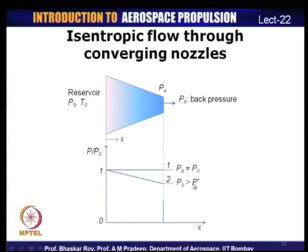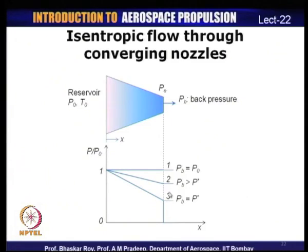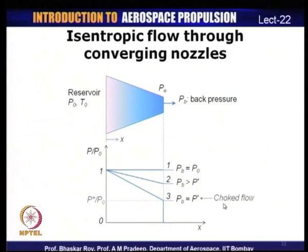From state 1 to state 2, back pressure is still greater than critical pressure. Reducing to state 3, where back pressure equals the critical pressure, the pressure ratio continues to drop. If back pressure is decreased below the critical value, there is no further change — the Mach number at the nozzle exit does not change; it remains the same.